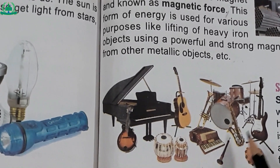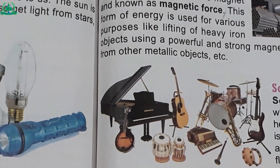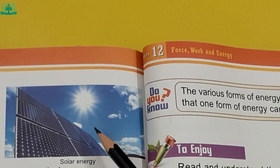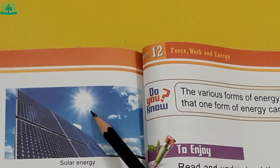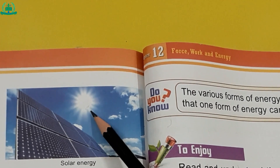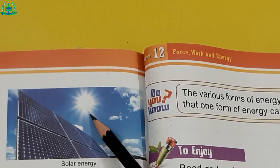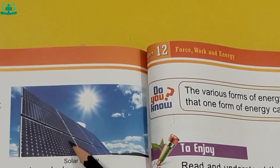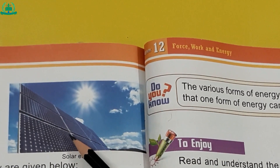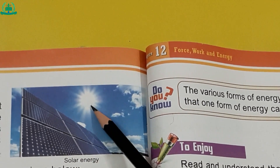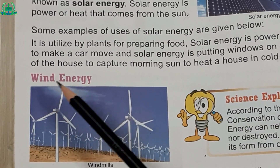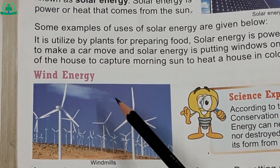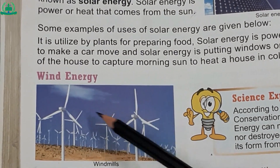Solar energy: as you know, the Sun is the great source of heat and light. The huge amount of energy emitted from the Sun is known as solar energy. Solar energy is the power or heat that comes from the Sun. Wind energy: wind is a natural source of energy.